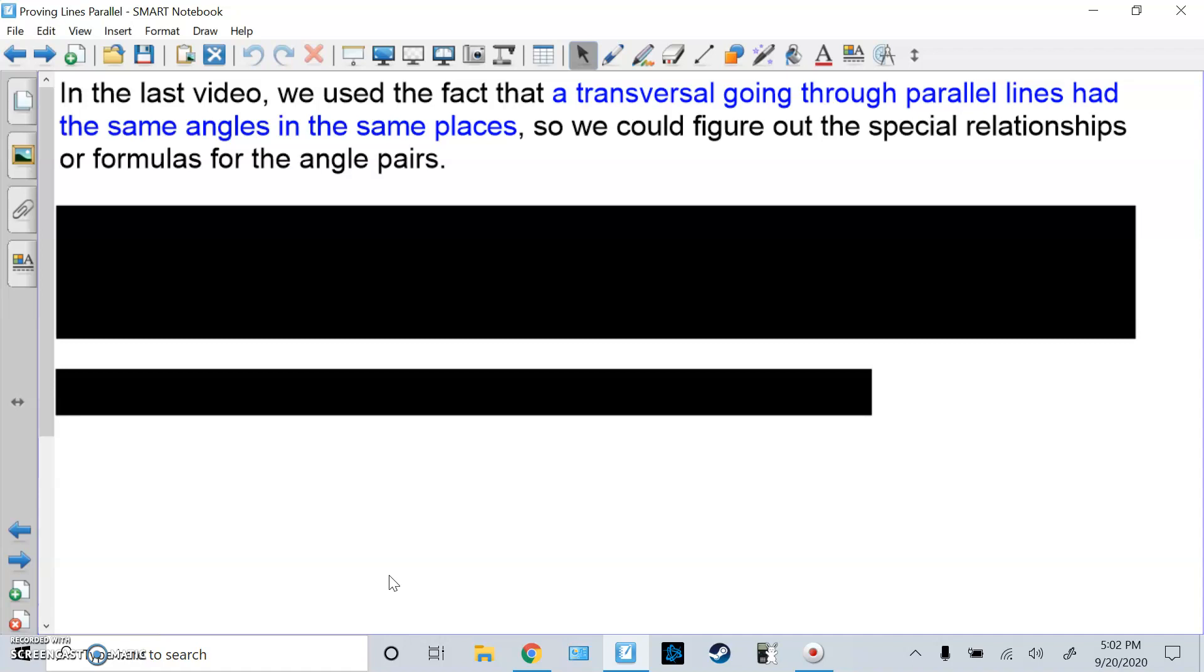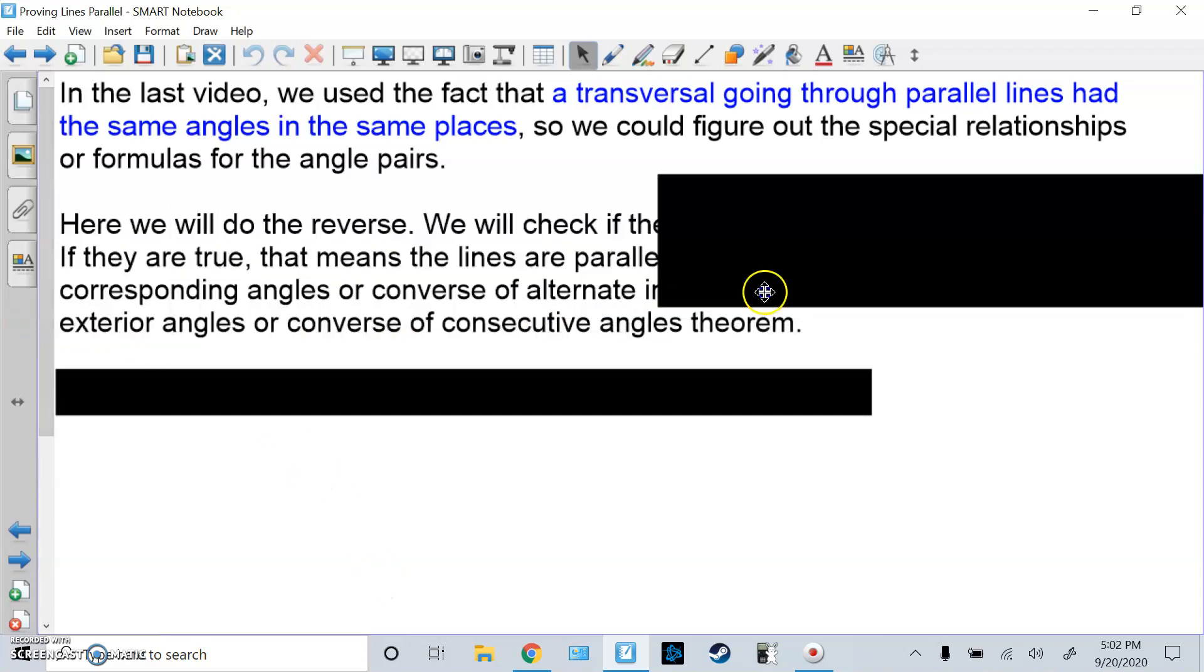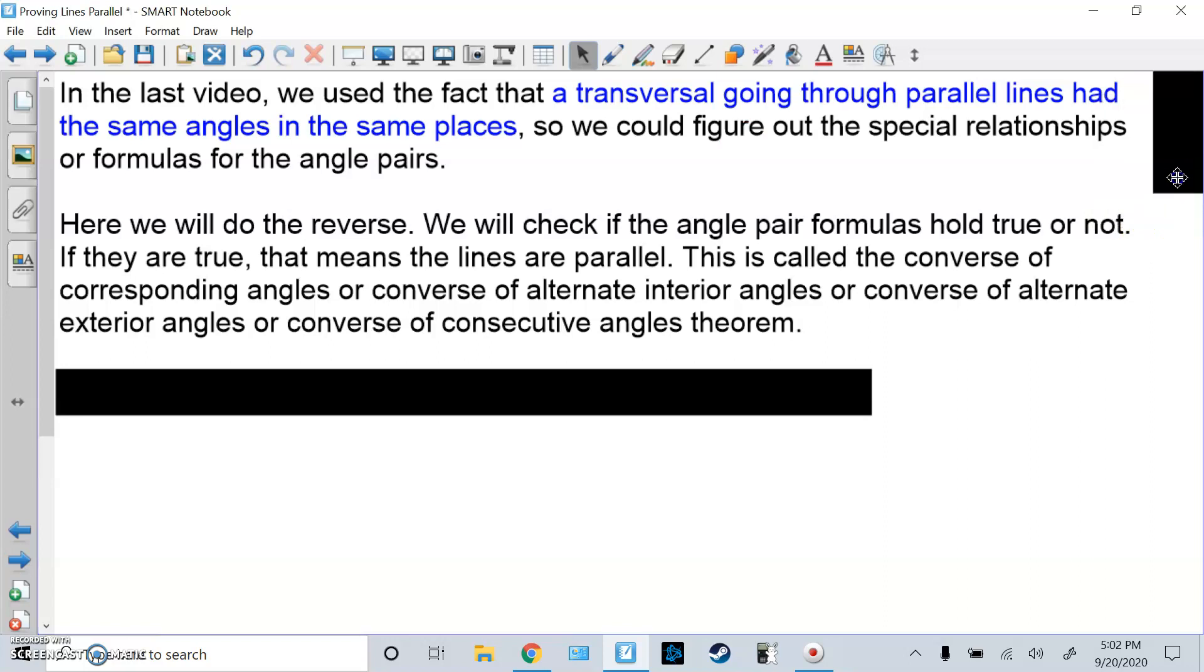In the last video, we used the fact that a transversal going through parallel lines had the same angles in the same places, so we could figure out the special relationships or formulas for the angle pairs. Here we're going to do the reverse. We will check if the angle pair formulas hold true or not. If they are true, that means the lines are parallel.